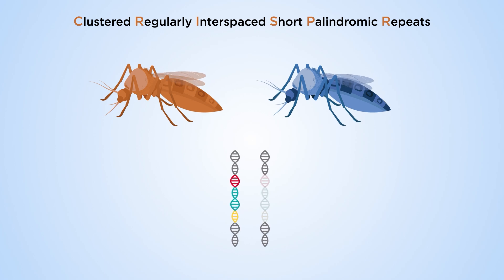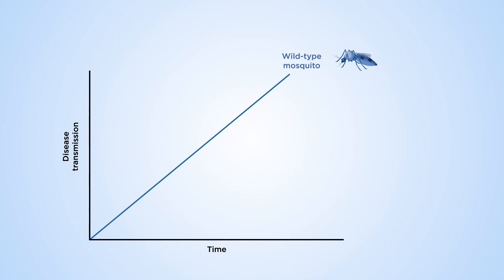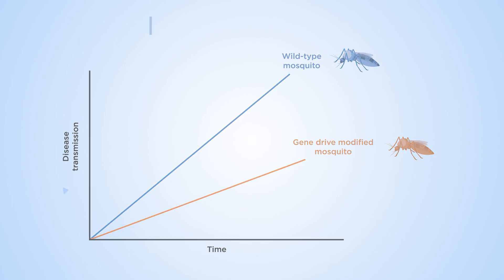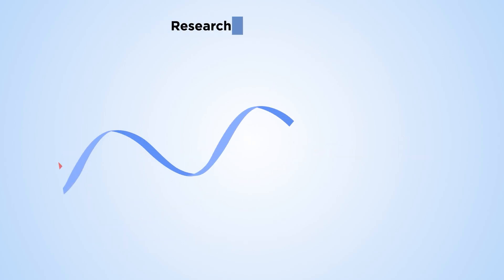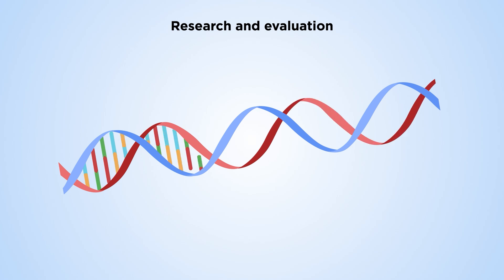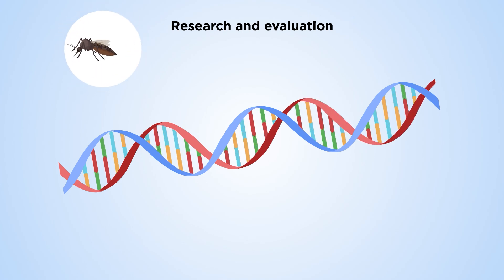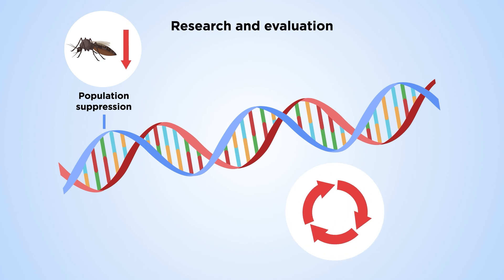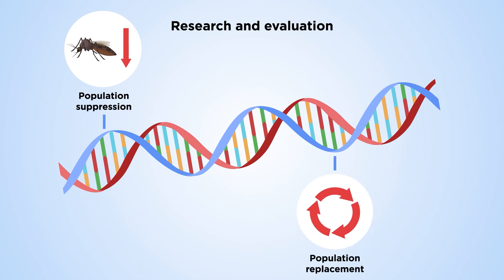In this way, gene drive modified mosquitoes are altered to curtail their ability to transmit diseases. Two main gene drive approaches are currently in the research and evaluation phases: population suppression and population replacement.